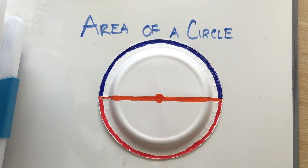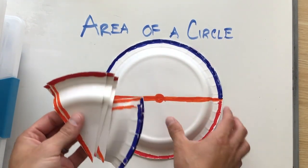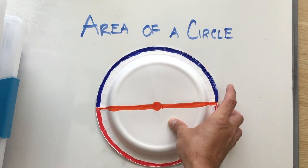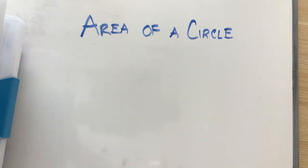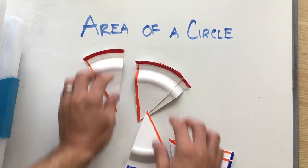So what you can do is you can take your paper plate, and you can cut it into eight slices. So in this case, I cut it into eight, you could cut it into more. And we're going to arrange them like a rectangle, because we know area of a rectangle is length times width.